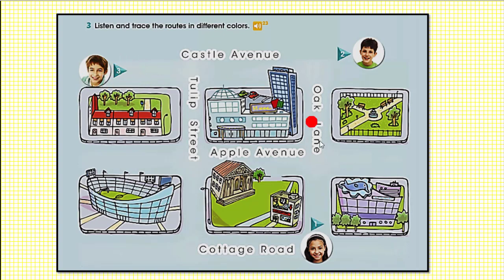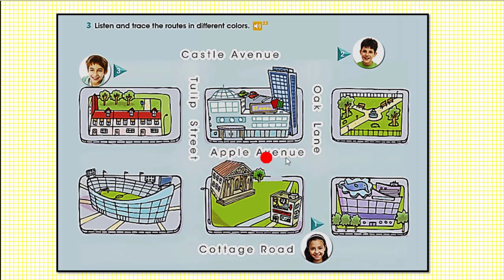First, I recommend you identify the spectacular places and then the streets. We have Castle Avenue, Tulip Street, Apple Avenue, Oak Lane, and Cottage Road. Primero identifica los lugares y las calles. Then we are going to listen together — escuchamos, por favor. Let's listen together.